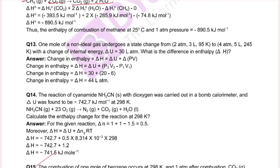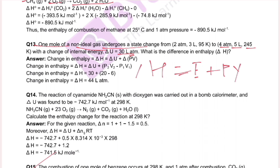One mole of a non-ideal gas undergoes a state change from 2 atm, 3 litres, 95 Kelvin to 4 atm, 5 litres, 245 Kelvin. The change in internal energy delta U equals 30 litre-atm. What is the difference in enthalpy? We use the equation H equals E plus PV, so delta H equals delta U plus delta(PV), where delta(PV) equals P2V2 minus P1V1.